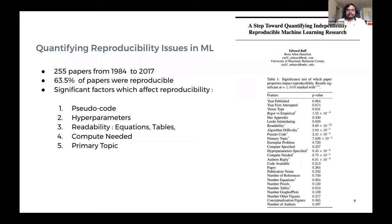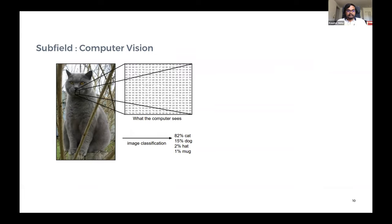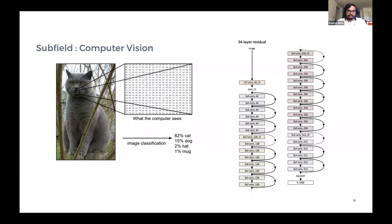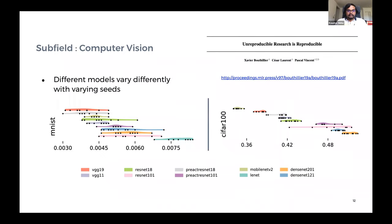If we dive deeper into subfields of machine learning, let's talk about computer vision. This is a field where people tend to think less about reproducibility because the usual notion is that whatever we are doing should be reproducible since it's the same dataset and same training pipeline. People in vision use model architectures such as ResNet or DenseNet to get pretty good performance on large standard datasets. But there are several works showing that reproducibility is still a big issue.